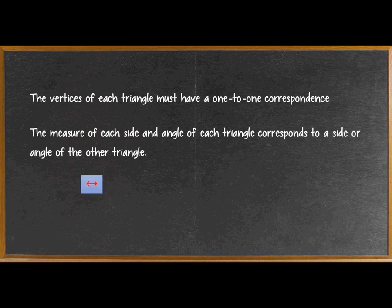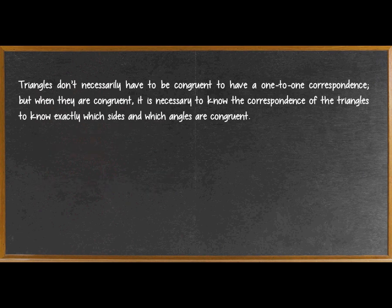And we use the left-right arrow symbol for correspondence. As we will see, triangles don't necessarily have to be congruent to have a one-to-one correspondence. But when they are congruent, it is necessary to know the correspondence of the triangles to know exactly which sides and which angles are congruent.